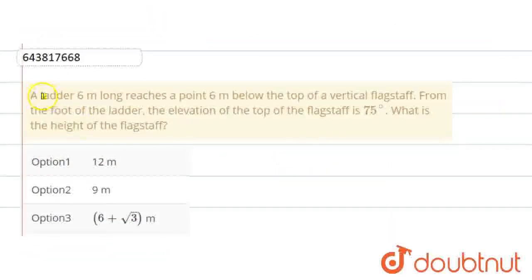Hello student, the question is: a ladder 6 meter long reaches a point 6 meter below the top of the vertical flagstaff. From the foot of the ladder, the elevation of the top of the flagstaff is 75 degrees. What is the height of the flagstaff?